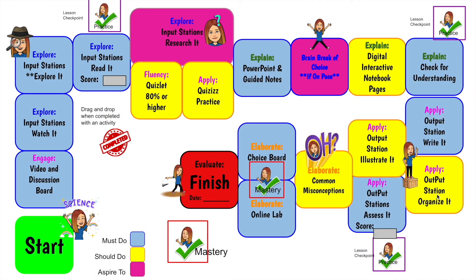Finally, this teacher set up her game board to serve as an activity tracker as well, but she included a differentiation option by color coding tasks into three categories: tasks that students must do, tasks that students should do, and tasks that are more challenging and that students can aspire to do. She also includes a key so that as a student goes through the different tasks, they can self-assess whether they've mastered the content — or you as the teacher can go through it with the student and decide, then drag stickers to mark tasks as mastered or still needing more practice.